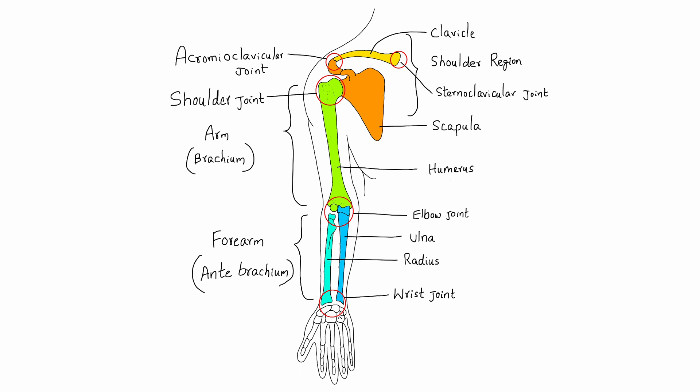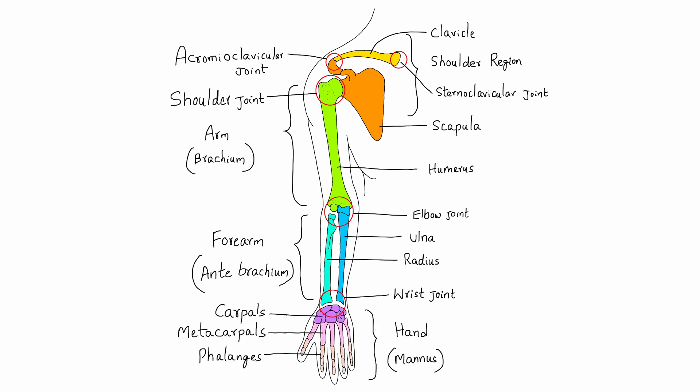The forearm is the part of the upper limb between the elbow and the wrist joint. The bones of the forearm are the radius and ulna. These bones articulate with the humerus at the elbow joint and with each other forming the radioulnar joint. The hand, also called manus, consists of the wrist or carpus, the hand proper or metacarpus, and the digits, which include the thumb and fingers.